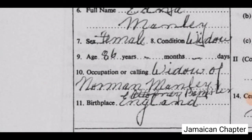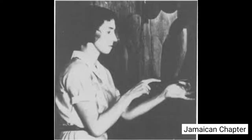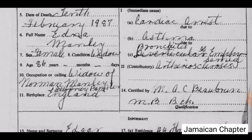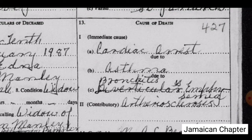Alright, let's continue on in the form. Down at the bottom, it says birthplace: England. And as I said before, she spent the first 22 years of her life in England. Let's move on to the right side of the form, where we'll see the cause of death.